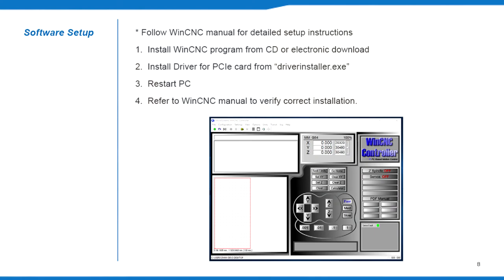To set up the WinCNC software, first install the main program from the CD or electronic download. Then install the PCIe card driver from the driver installer program and restart the PC. Refer to the WinCNC manual for procedures to verify that both the CNC program and PCIe card have been installed correctly.